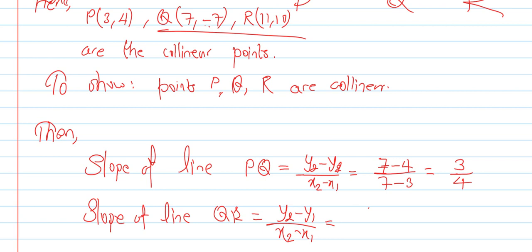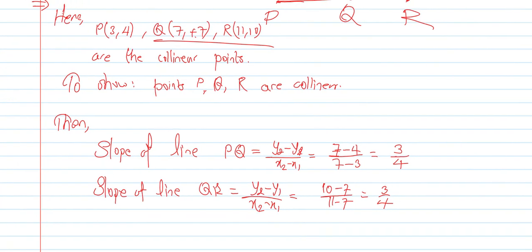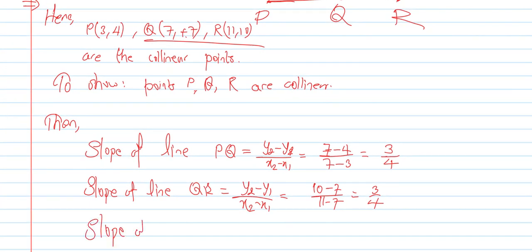Slope of line PR: (y2 - y1) upon (x2 - x1) equals (10 - 4) upon (11 - 3) equals 6 upon 8 equals 3 by 4.